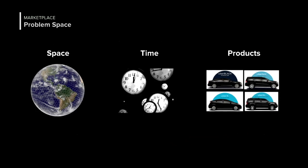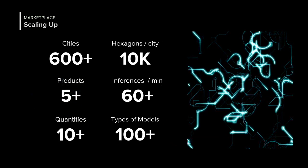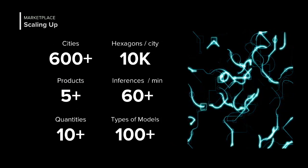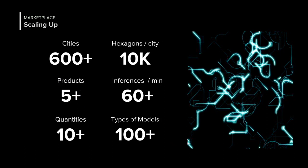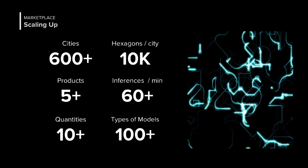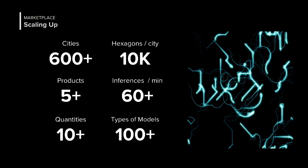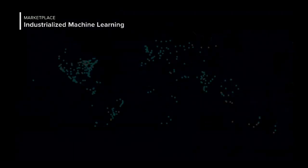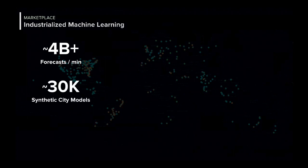To sum this up, we have problems that span space, time, and a multitude of products. This needs to scale up — you can't do this on one person's laptop or in an R model that's running. We really need to figure out how to do this to serve 600 marketplaces reliably, with 10,000-dimensional heavy dimensionality, in a successful way. The way we did that is we industrialized our machine learning platforms — that's how we get to 4 billion forecasts per minute and 30,000 synthetic control models running to perform these inferences.